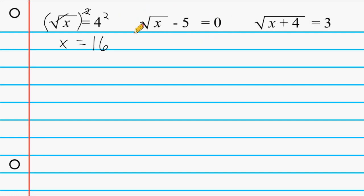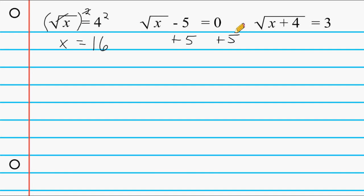With this example we have the square root of x minus 5 equals 0. Notice that this minus 5 is not underneath the radical symbol. So what we have to do is we have to send this minus 5 over to the other side of our equation. We're going to do the opposite of minus 5, which is adding 5, and we balance our equation by doing the same thing to the other side. On the right hand side we have 0 plus 5 which is 5, and on the left hand side we just have the square root of x.